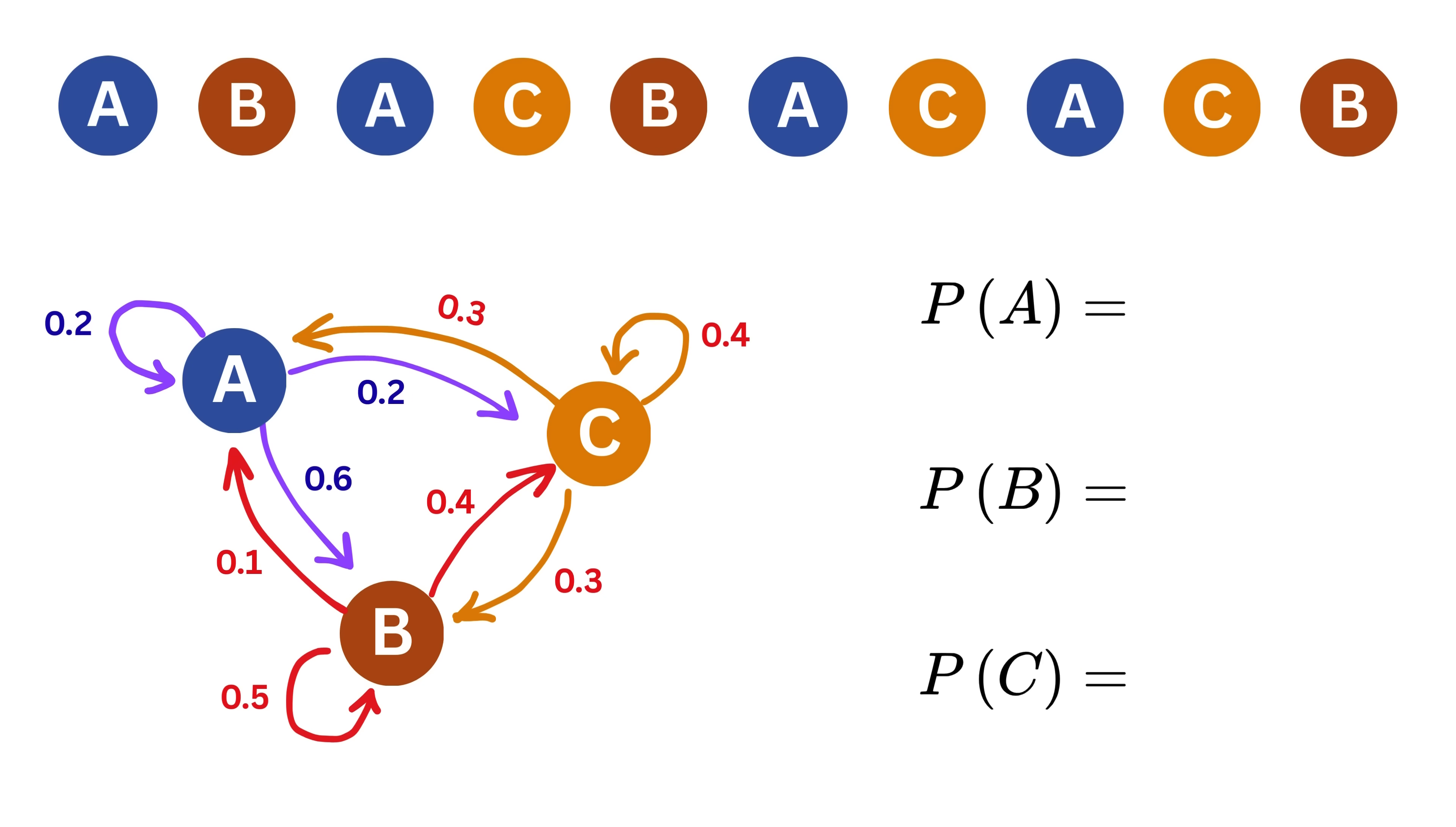Then, we divide those counts by 10 to get a rough idea of how likely it is for the user to be on each page. For instance, if they landed on page A four times, page B three times, and page C three times, the probabilities would be 4 upon 10 for page A, 3 upon 10 for page B, and 3 upon 10 for page C.